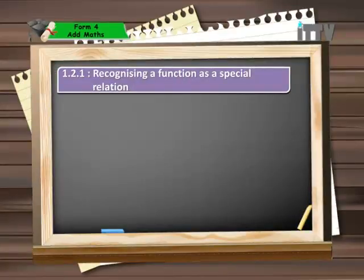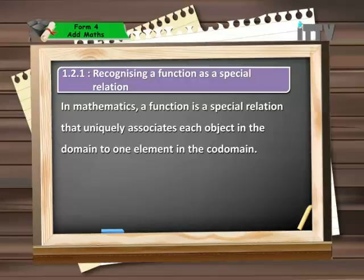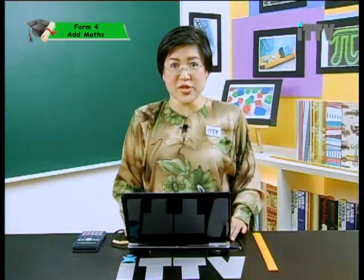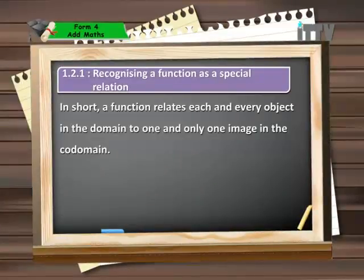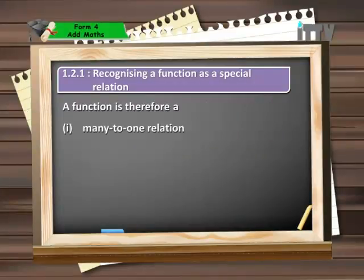Recognising a function as a special relation. In mathematics, a function is a special relation that uniquely associates each object in the domain to one element in the co-domain. I hope viewers that you do remember the words domain and co-domain and what they stand for. The domain would be the values where the objects lie and the co-domain would be the values where the images lie. In short, a function relates each and every object in the domain to one and only one image in the co-domain. A function is therefore a many-to-one relation or a one-to-one relation.